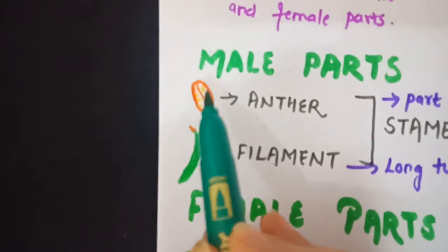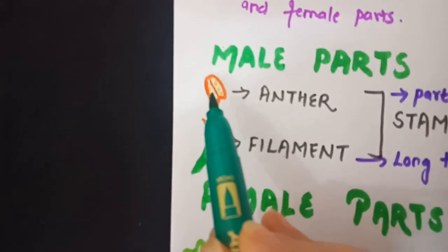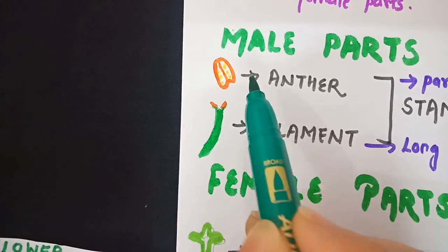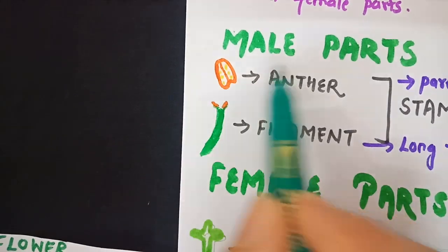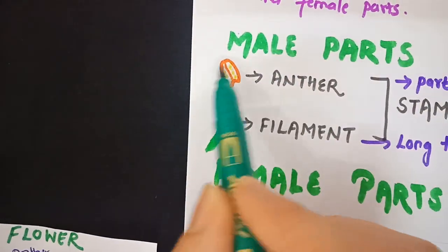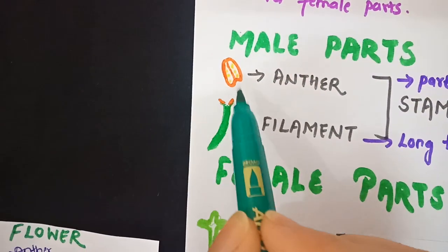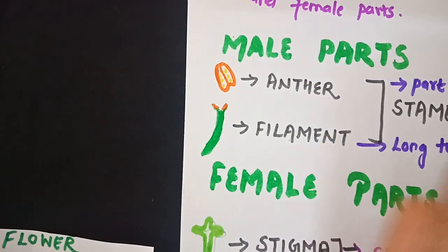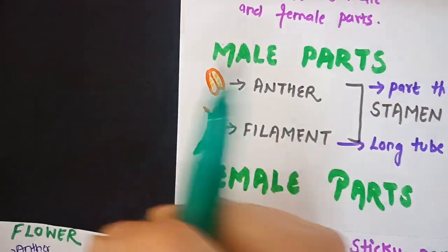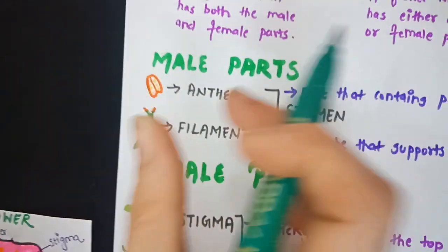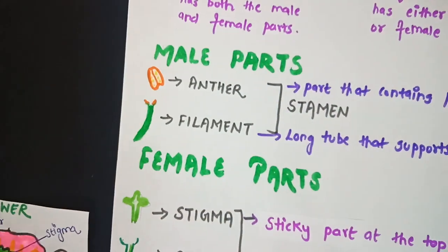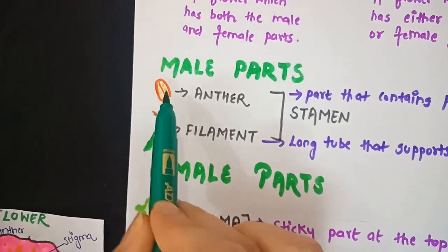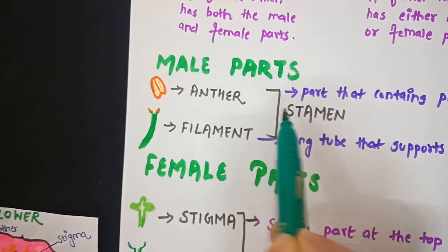The yellow tiny dots in the diagram are the pollen grains. Pollen grains are produced by the anther — the male part. They help the plant to reproduce and give birth to a baby plant. Pollen grains will always be present inside the anther.